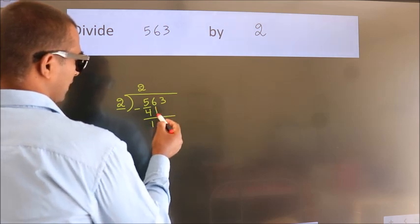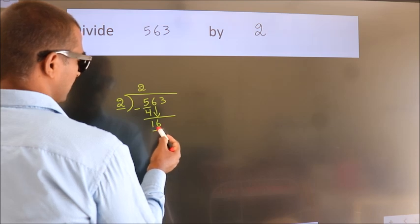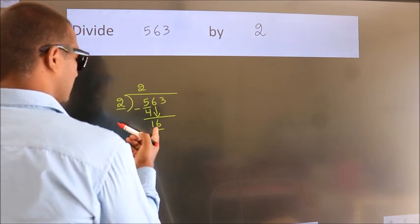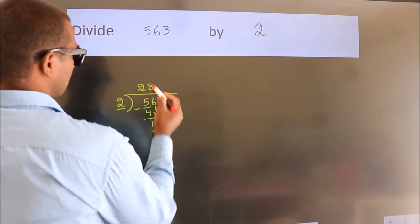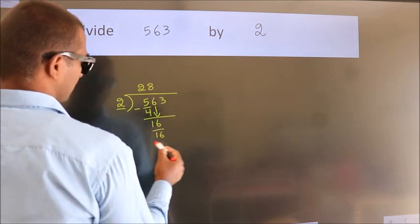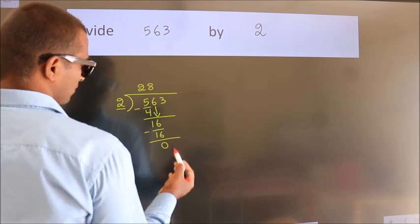After this, bring down the beside number. So 6 down, making 16. When do we get 16 in the 2 table? 2 times 8 is 16. Now we subtract. We get 0.